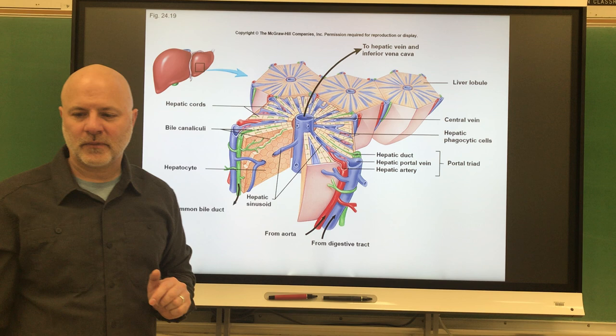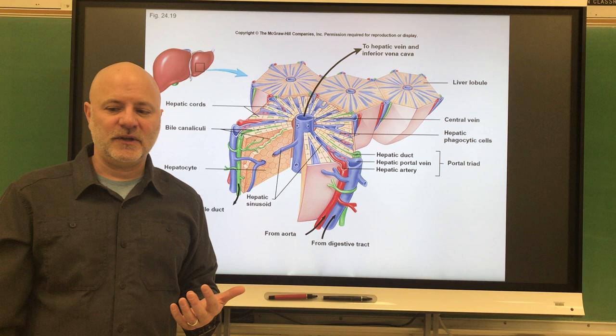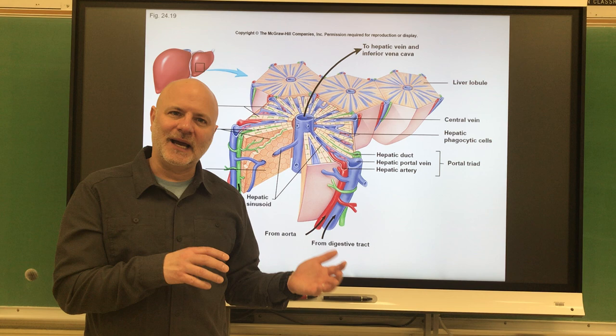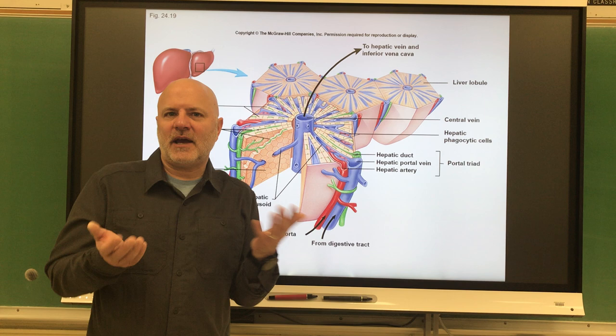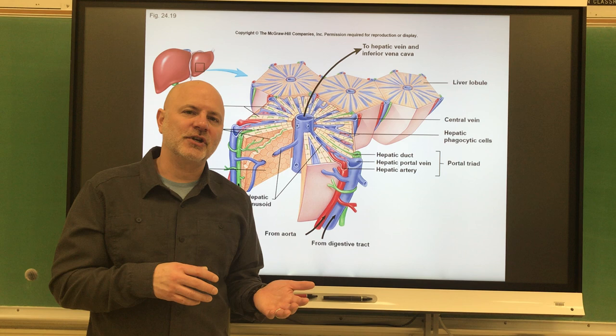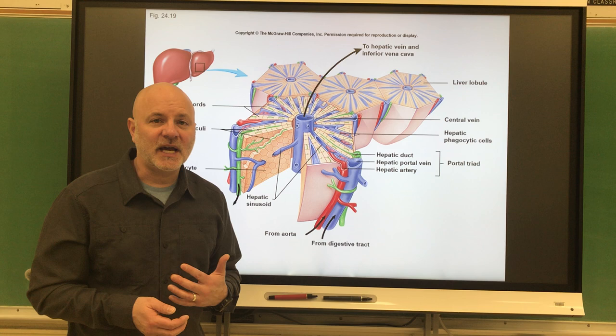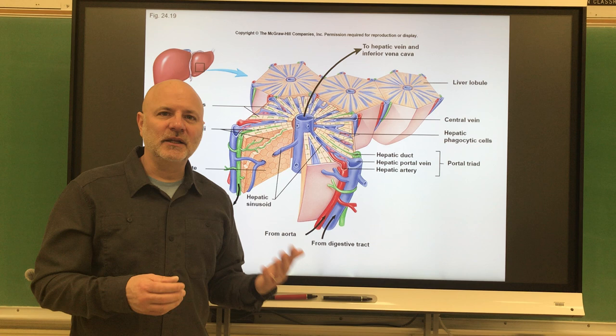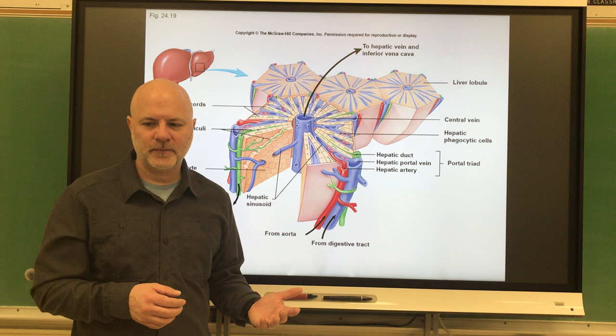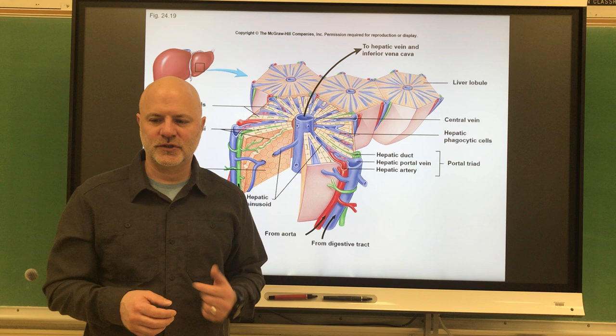Looking at the functions of the liver: first is carbohydrate metabolism. It can make glycogen — our storage form of glucose — from glucose after a meal, and can break down glycogen into glucose and release it into the blood between meals when we're getting hungry. It can also convert non-carbohydrates to glucose. For lipid metabolism, it can break down fatty acids for energy, make lipoproteins and phospholipids, synthesize cholesterol, and convert proteins and carbohydrates to fats for storage.